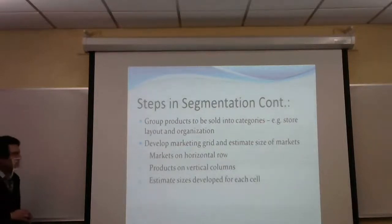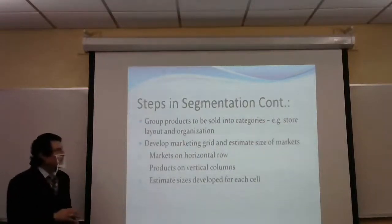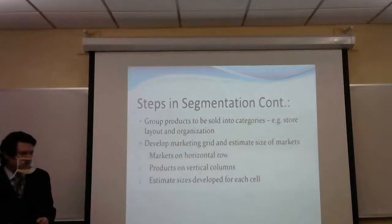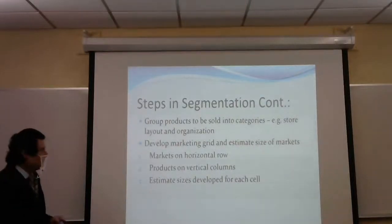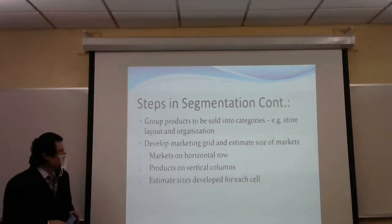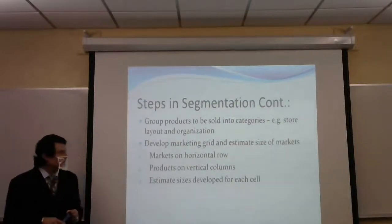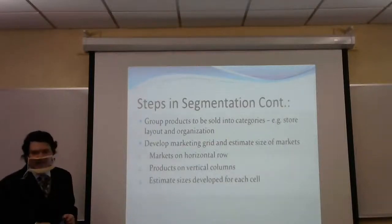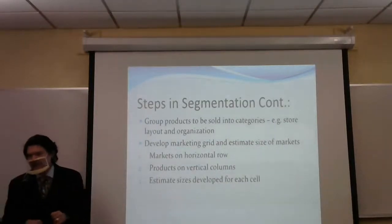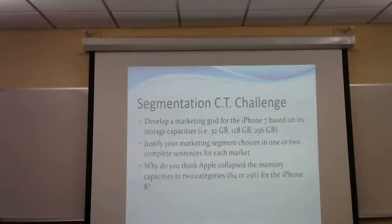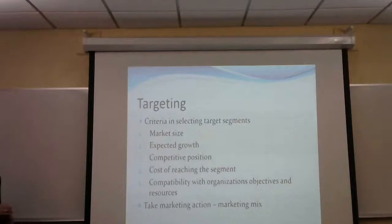We can group products to be sold into categories once we segment and lay out the store, based on that, to make things easier for people. We can develop marketing grids and estimate the size of the markets we want to reach — put markets on horizontal rows and products on vertical columns, then estimate the size for each cell in the segment we're going to target.